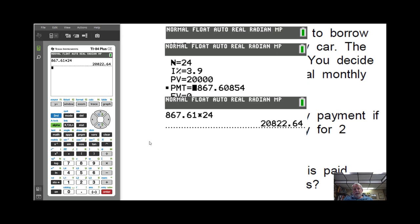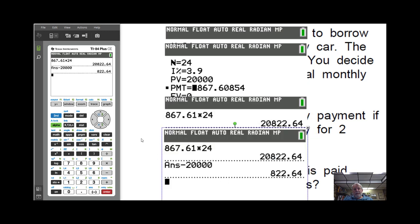So the interest is that amount minus the $20,000, $822.64 in interest in two years. It's a good idea to talk to your students, how could you make it cheaper and so on.